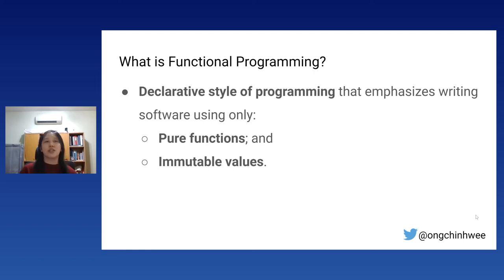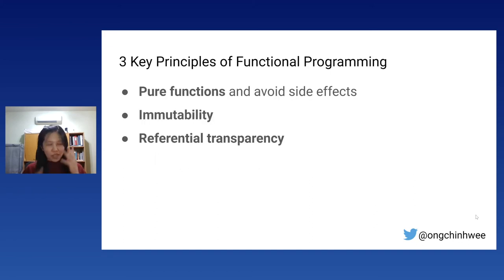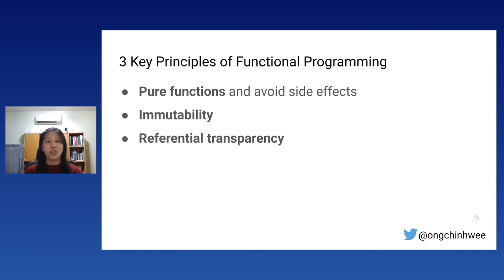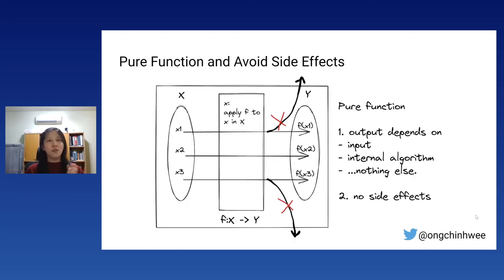This brings us to the paradigm of functional programming. Functional programming is a declarative style of programming that emphasizes writing software using only pure functions and immutable values. There are three key principles: first, use pure functions and avoid side effects; second, ensure immutability; and third — the most important — the concept of referential transparency, which I'll elaborate on later.